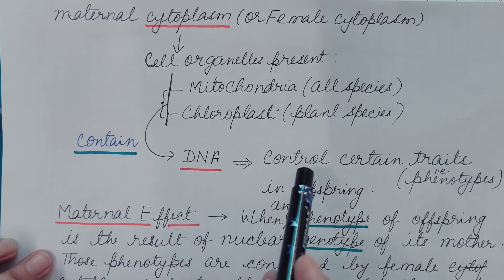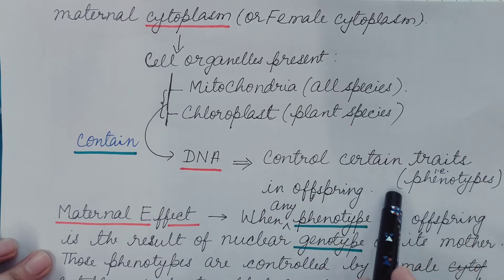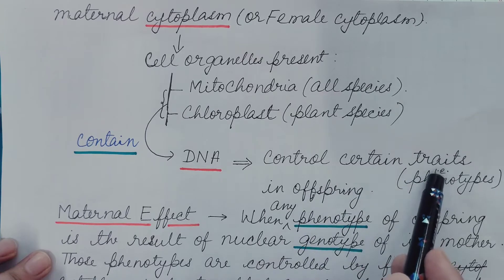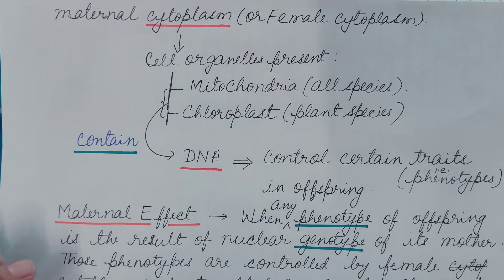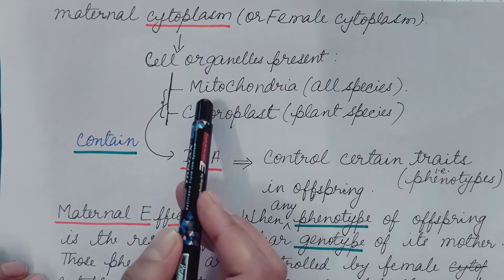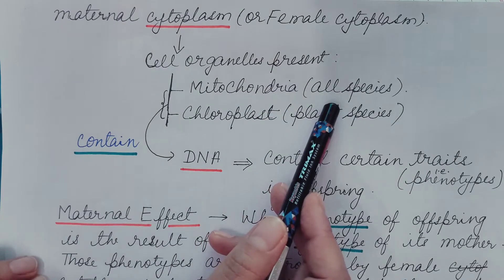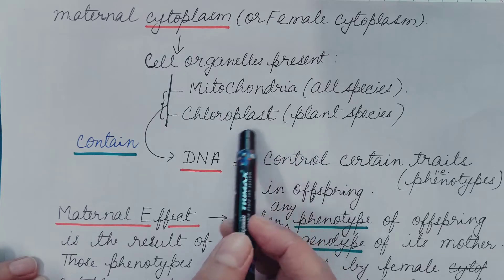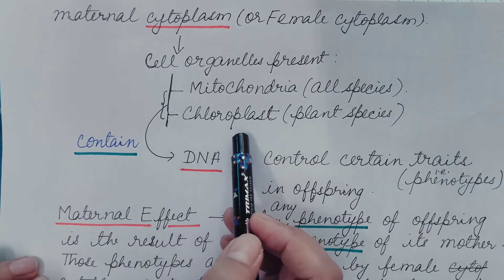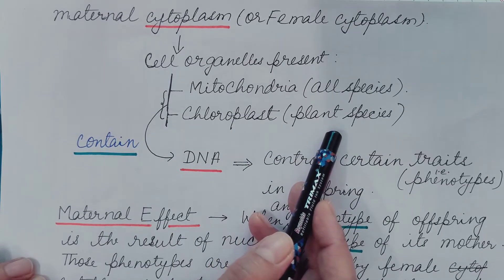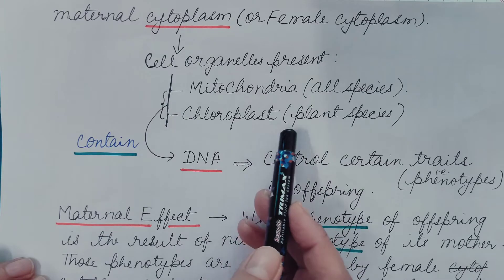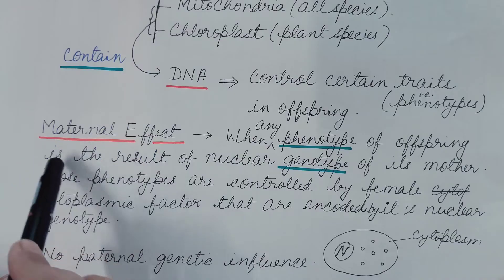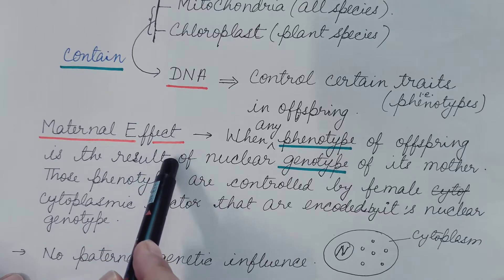These DNA also control certain traits in the offspring, or certain phenotypes. We have discussed extra nuclear inheritance by mitochondria, taking the example of the petite mutant in yeast, and by chloroplasts, taking the example of the experiment done by Carl Correns and Mirabilis jalapa. You can refer to my previous videos for these — the link is given in the description box. Today we are going to discuss another term: maternal effect.